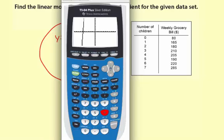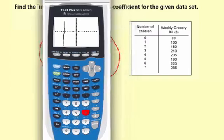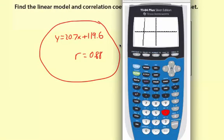Well I hope that's been helpful using the calculator to find a linear model, the correlation coefficient, and also showing you how to display your scatter plot and your regression equation on the calculator so you can process the data.